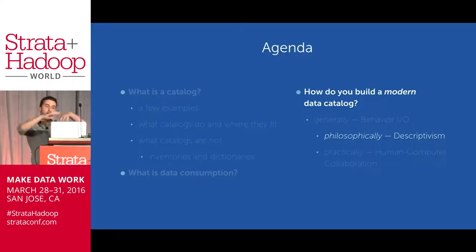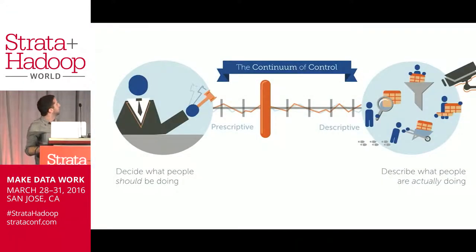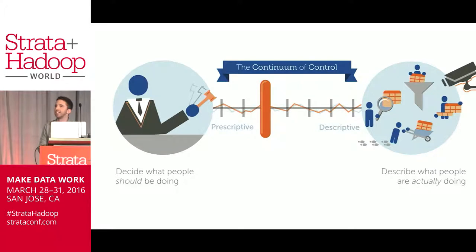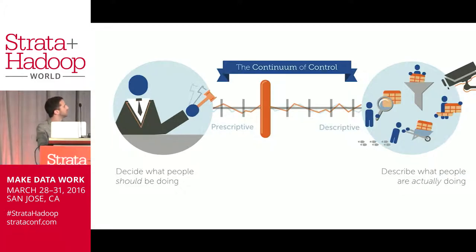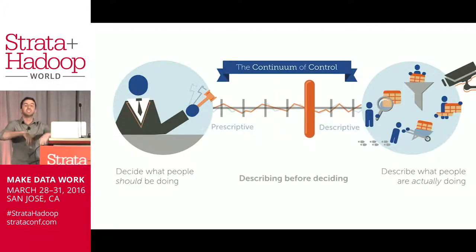In short, in a modern catalog you employ mixed methodologies with humans and computers together to observe, aggregate, and surface all prior data consumption information in order to make future data consumption efficient and accurate. There are two shifts in mindset to get there: one more philosophical, the next practical. Philosophically, there's the idea of the continuum of control — a constant tension in organizations between trying to decide what people should be doing versus just describing what they're actually doing. We see people filtering data, searching data, inserting rows, migrating data — they all leave behind footprints in the logs.